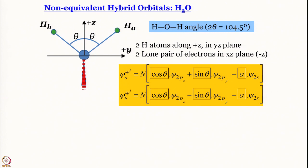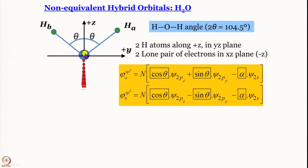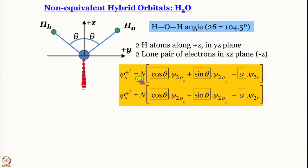We write expressions for the hybrid orbitals. The two hydrogen atoms are named Ha and Hb. For φa, the angle between the z-axis and this hybrid orbital is (90° − θ), so the pz coefficient is proportional to sin θ. For the 2s contribution we write coefficient −α, and the whole expression is multiplied by normalization constant n.